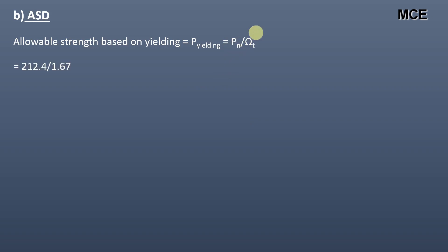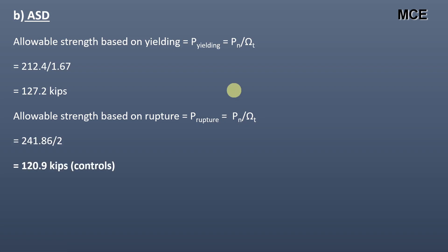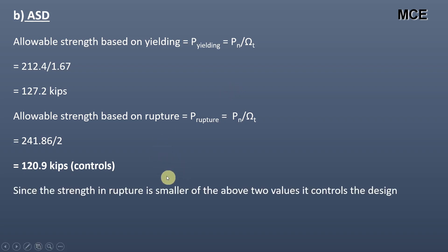For ASD, the allowable strength based on yielding is given as the nominal strength in yielding divided by the safety factor in yielding, which equals 112.4 divided by 1.67, which equals 127.2 kips. The allowable strength based on rupture is given as the nominal strength in rupture divided by the safety factor in rupture, which equals 241.86 divided by 2, which equals 120.9 kips.